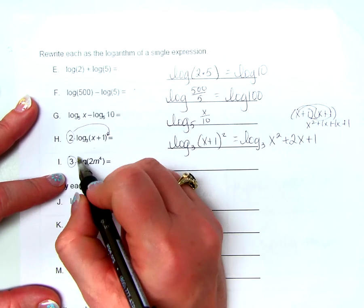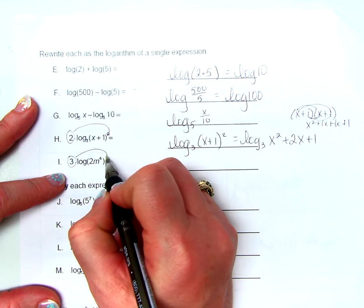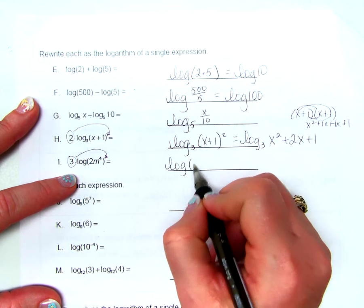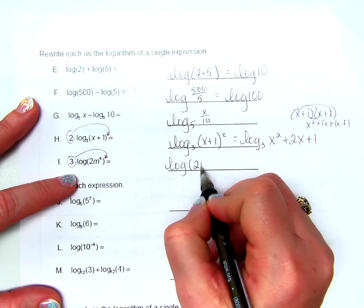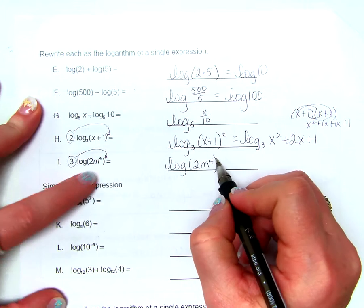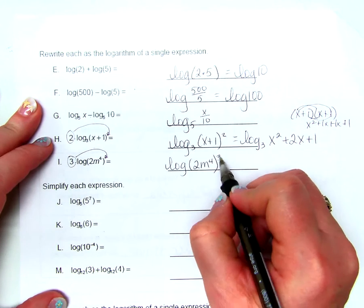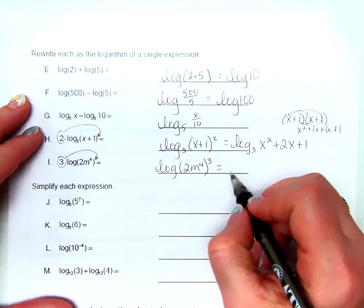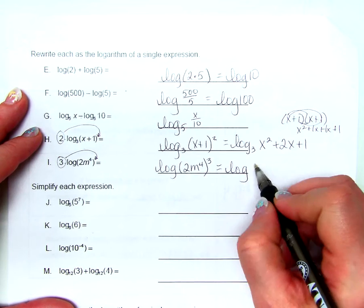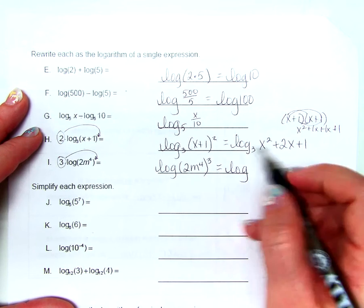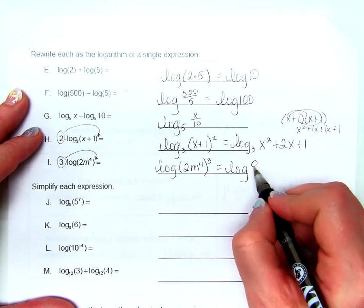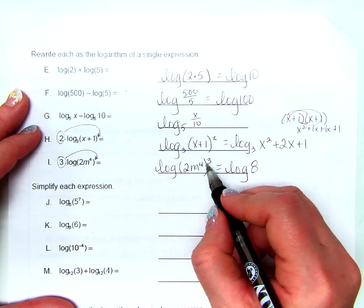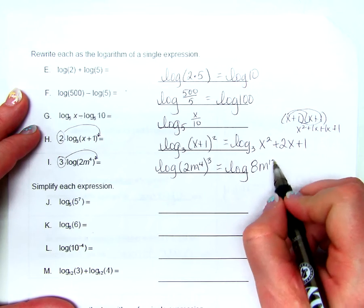The multiplier in front comes up as an exponent, giving log of 2m to the 4th, all raised to the 3rd power. Since everything inside is raised to the 3rd power, we get log of 2 to the 3rd, which is 8, times m to the 4th to the 3rd, which is m to the 12th.